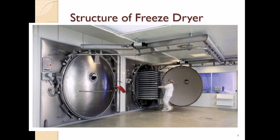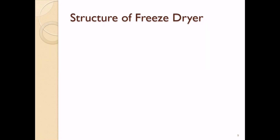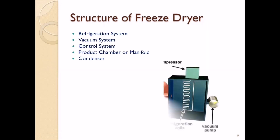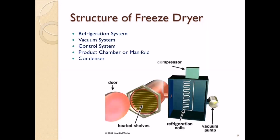Let's start by understanding the structure of the freeze-dryer. A freeze-dryer basically has five systems: a refrigeration system, a vacuum system, a control system, a product chamber or manifold, and a condenser.